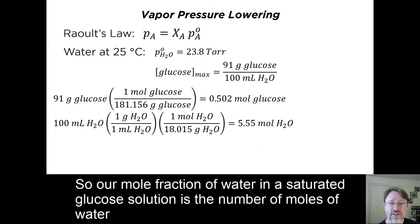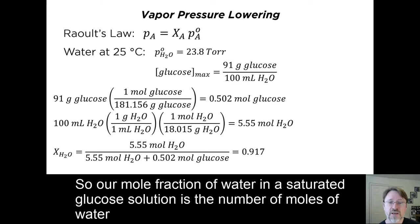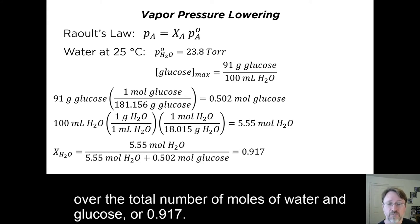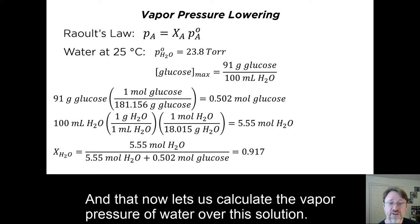So, our mole fraction of water in a saturated glucose solution is the number of moles of water over the total number of moles of water and glucose, or 0.917. And now, that lets us calculate the vapor pressure of water over the solution.